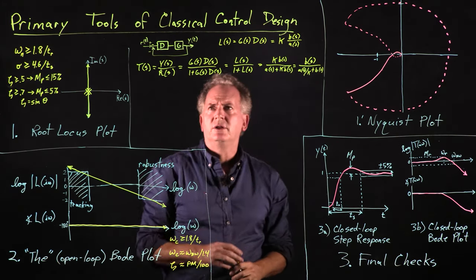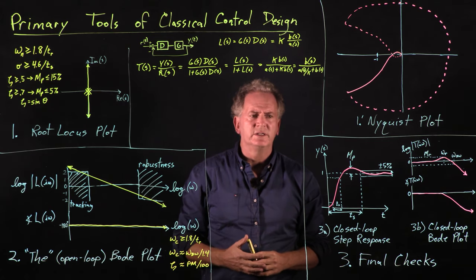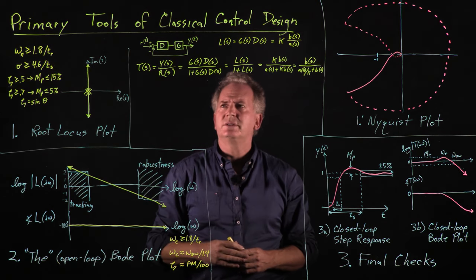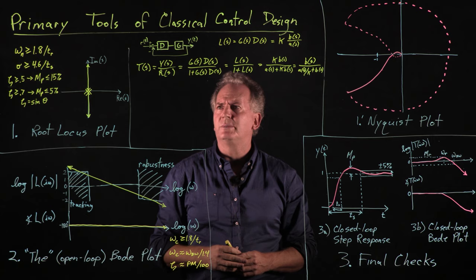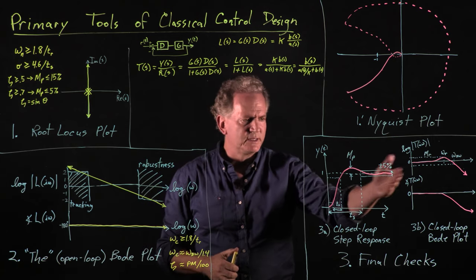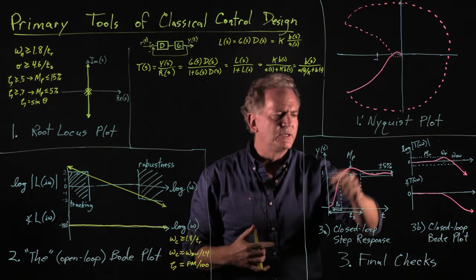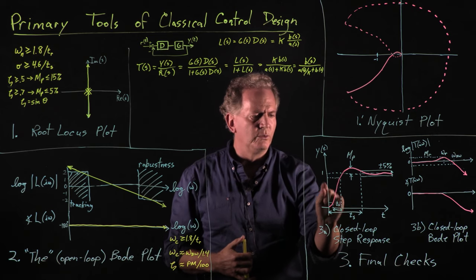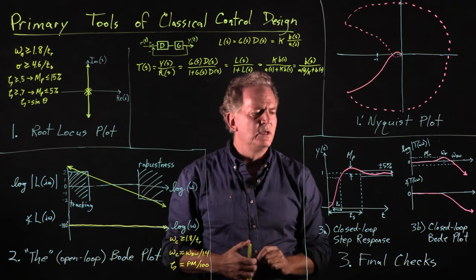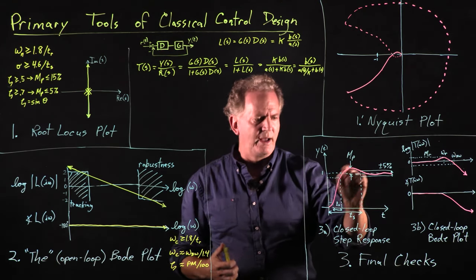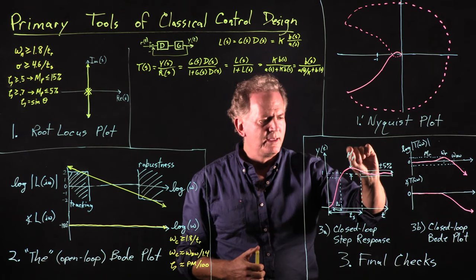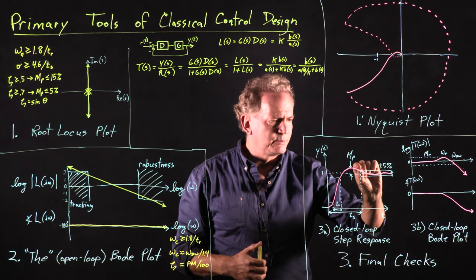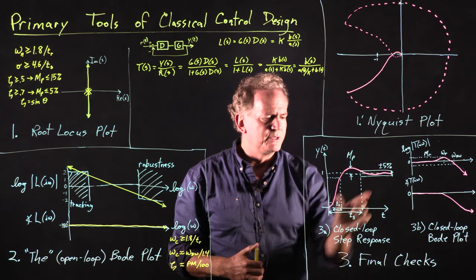With this understanding of the closed-loop transfer function T(s), and our knowledge of signals and systems, we can take the step response of T(s) and characterize what it behaves like. What we're looking for is a step response like this pink line — if we put in a unit step, we'll get out a response with a finite rise time, which is the time it takes to go from 0.1 to 0.9 of the final value. It'll overshoot the desired target a little bit, so we call M_P the percent overshoot, and it will settle within plus or minus 5% of the final value, which we denote the settling time.